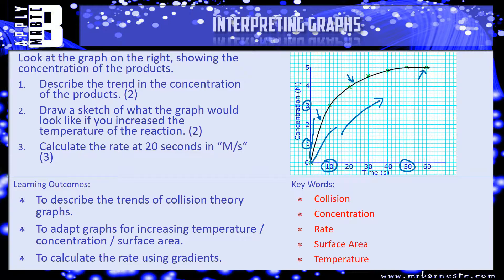And then finally, calculate the rate at 20 seconds in meters per second. So, when it says 20 seconds, you have to find 20 seconds on the graph, go all the way up here, and draw your tangent. And then remember, pick some values off, find out what that distance is, what that distance is, and divide height by base. And that will give you your gradient. Have a go at it, and we'll see how you've done shortly.